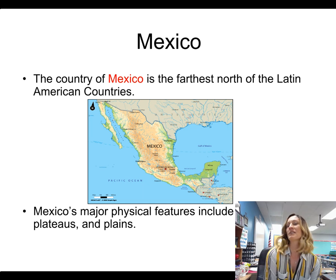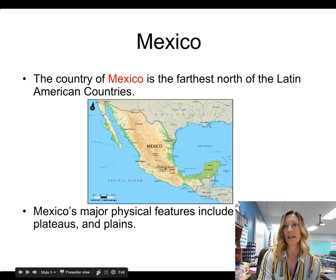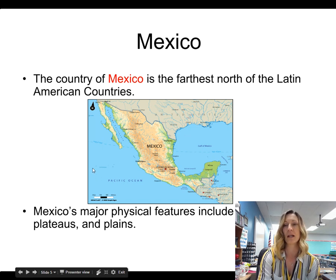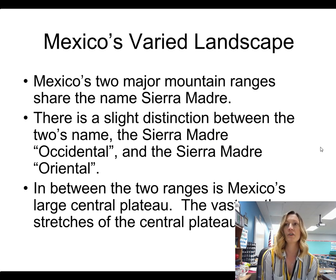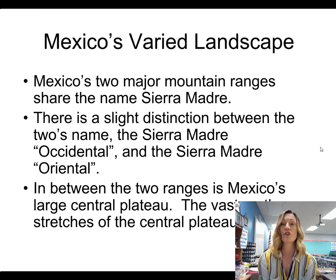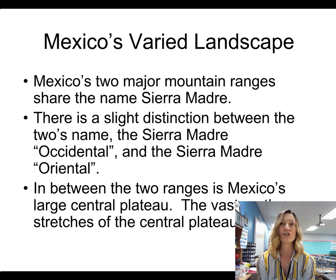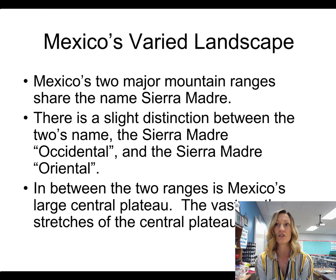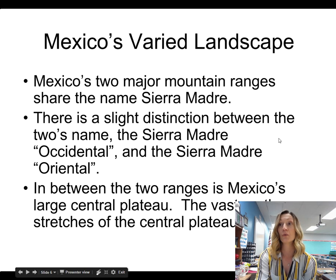So let's start off talking about Mexico. The country of Mexico is the furthest north of the Latin American countries, shown on this map. Mexico's major physical features include mountains, plateaus, and plains. Mexico's two major mountain ranges share the same name — the Sierra Madres — with a slight distinction: the Sierra Madre Occidental and the Sierra Madre Oriental. In between the two ranges is Mexico's large central plateau.